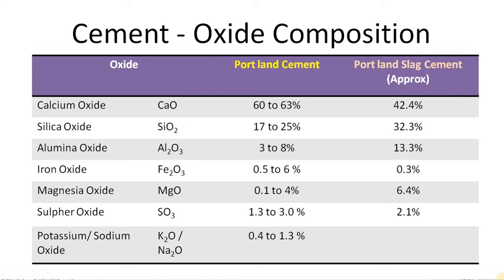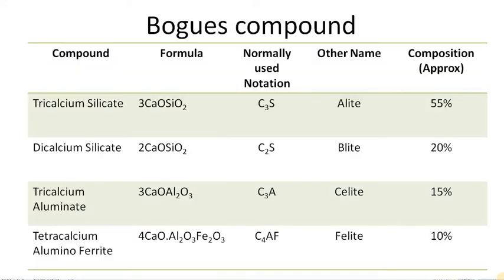According to the variation of the oxides, the percentage of the complex compounds will vary. These complex compounds are known as Bogue compounds. There are four compounds: tricalcium silicate (C3S), dicalcium silicate (C2S), tricalcium aluminate (C3A), and tetracalcium alumino ferrate (C4AF). These are also known as alite, belite, celite, and felite respectively.